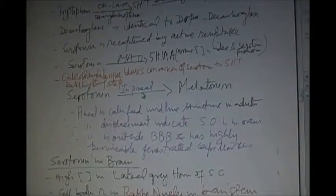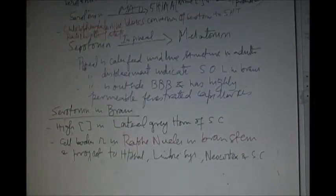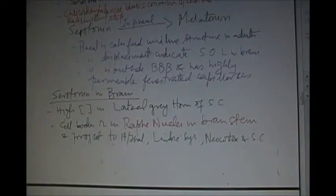Serotonin in the pineal gland is converted to melatonin. So what is pineal gland and what is the importance of pineal gland? Pineal is a calcified midline structure in the adult brain. Pineal displacement indicates a space occupying lesion in the brain. Pineal is outside the blood brain barrier and has highly permeable fenestrated capillaries.